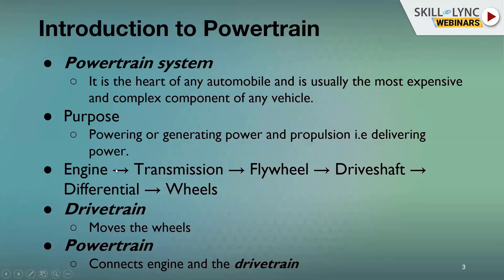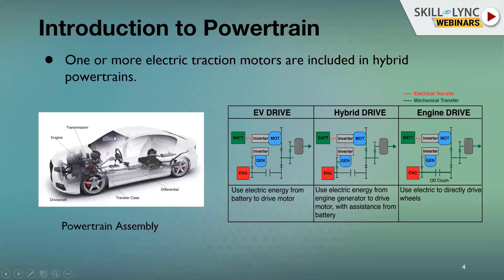The power is transmitted like this: from the engine, power is generated; it goes to the transmission, and through the flywheel or drive shaft it goes to the differential and to all four wheels. This is how power is transmitted from engine to wheels. A driveline is the part which moves on the wheels — anything above the wheel is called the driveline. Powertrain is what connects the engine and the driveline.